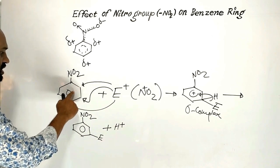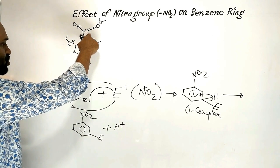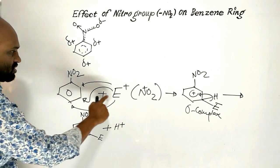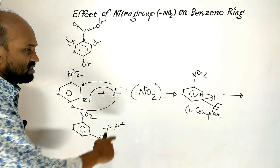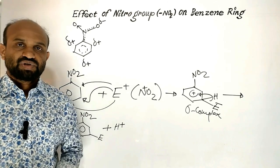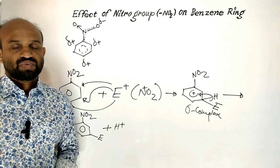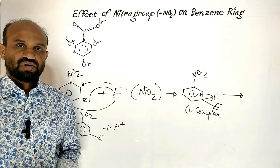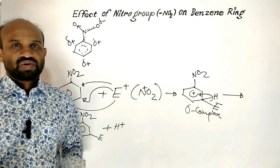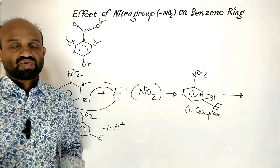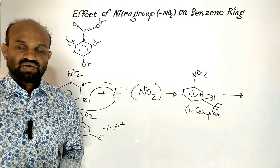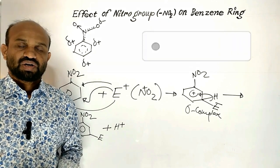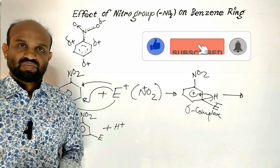Electrophilic substitution does not occur at ortho and para positions, because the nitro group creates a partially positive charge over ortho and para positions. That is why the electrophile comparatively easily attacks the meta position, and electrophilic substitution occurs at the meta position. Nitro group deactivates the benzene ring towards electrophiles by withdrawing electrons from the benzene ring. So nitro group is a kind of electron withdrawing group and a benzene ring deactivating group. Nitro group is a meta-directing group towards electrophiles. This is the effect of nitro group on benzene ring.